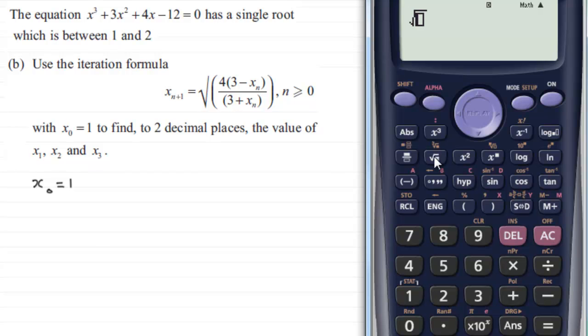We enter square root, then I'm going to use the fraction button, and then we've got 4, then the bracket, 3 minus - now instead of this x_n we hit the answer key - and then we'll close the bracket.